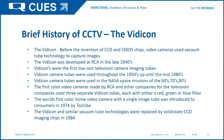The first color video cameras made by RCA and other companies for television used three separate tubes with red, green, or blue filters to achieve color. The first color home video camera with a single image tube was introduced to consumers by Toshiba in 1974. Before that it was all black and white, and it wasn't until the mid-seventies that we actually had color video cameras. The vacuum tube technologies were replaced by solid-state CCD imaging chips in 1984.